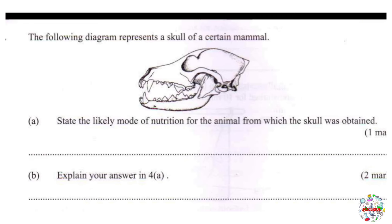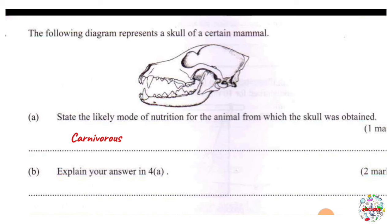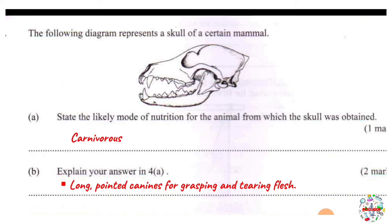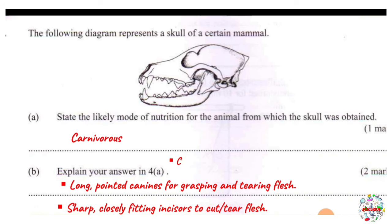Note that students sometimes incorrectly write carnivore, omnivore, or herbivore — this is completely wrong. Our mode of nutrition is carnivorous. The reason is that if you look at the canines, they are long and pointed for grasping and tearing flesh. Another feature is sharp incisors for cutting flesh.